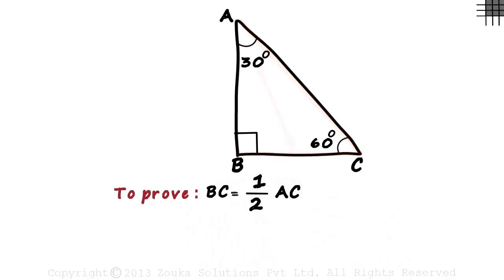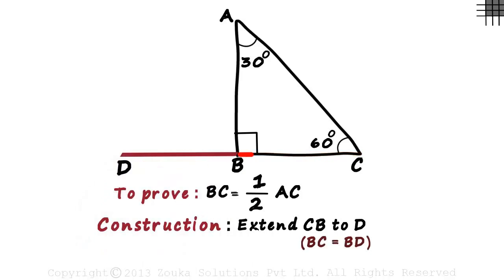How do we prove that? This figure does not tell us anything. So we have to do a little bit of construction to find a way out. Let's extend CB to D like this such that BC is equal to BD. This length should be equal to this length. And then we join AD like this.